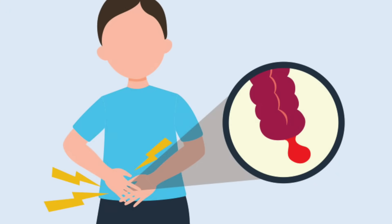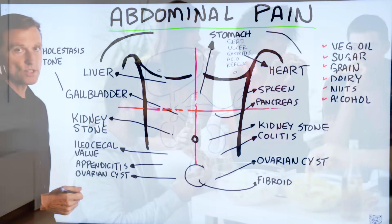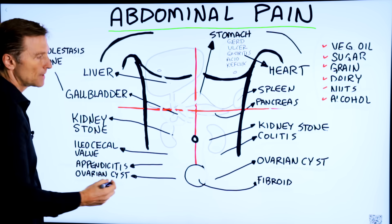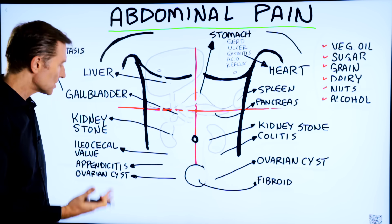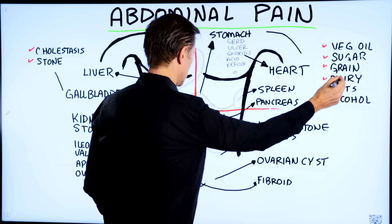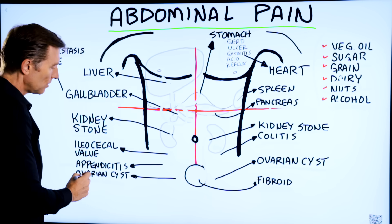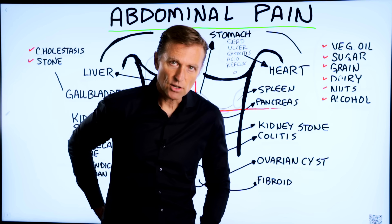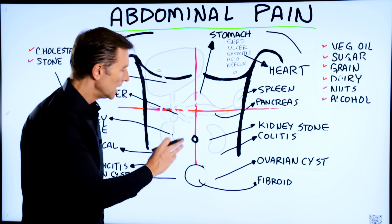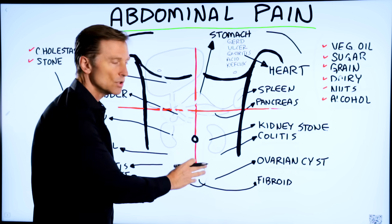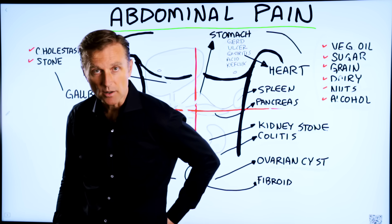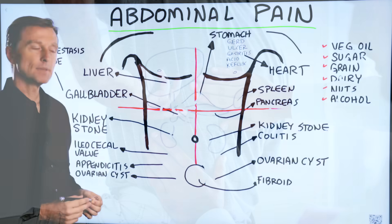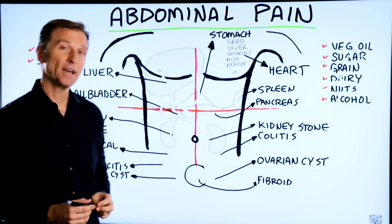If you have pain at the appendix, it could be inflammation and is usually related to what you're eating. If you're female and have pain a little bit lower, that could be an ovarian cyst — sea kelp with iodine will help, along with cruciferous vegetables, and avoid dairy. The ovarian cyst can also refer pain to the back around the sacroiliac joints. An enlarged prostate or inflamed uterus could shoot pain to the sacrum area, and a kidney stone can refer pain to the back. Those are some tips on what to do if you have abdominal pain.